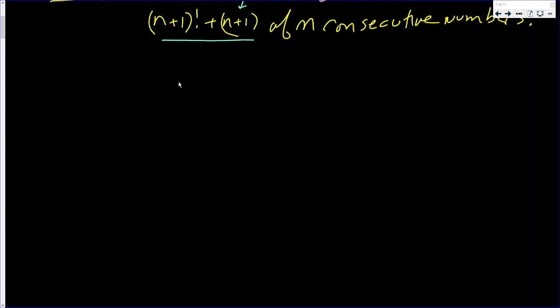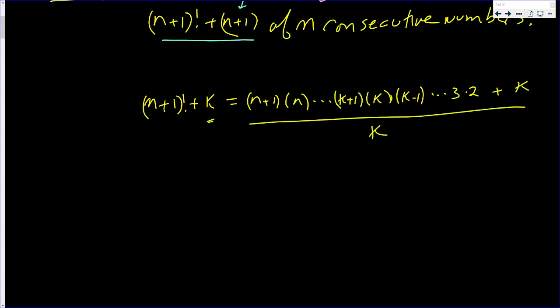You have (n+1)! + k. Well, this is (n+1) times n times (n-1), eventually, take k+1, take k, (k-1) all the way down to 3 times 2 plus k. Well, k certainly goes into it.